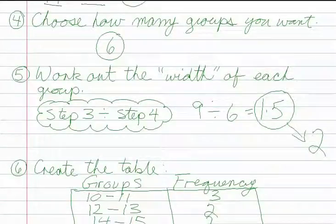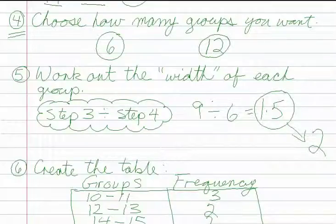The next step is step four, which is choose how many groups you want. Well, this is really kind of up to you. You can choose two groups, you can choose 30 groups, it's up to you. But given the fact that we have only 12 marks, it seems fairly logical, fairly sensible that we should have six groups. But we could have five, we could have four, it doesn't matter really. So we've picked six. We go to step five now.